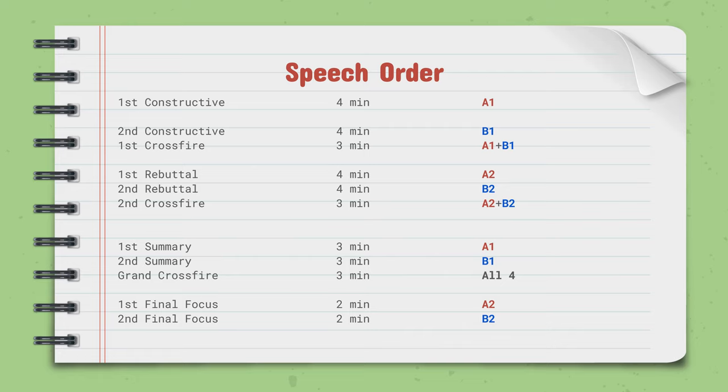This is the important document — you might want to take a picture or screenshot so you can remember. For new debaters, it oftentimes takes a long time to remember the order. You first have the first constructive speech and second constructive, where you read your arguments and explain what they are. Those are given by the first speakers — Team A's first speaker reads the first constructive, and Team B's first speaker reads the second constructive. Those are both four minutes. After that, there's a crossfire where the first speakers on both teams ask each other questions. Then we move on to the rebuttals, which are also four minutes, and the second speakers give these.